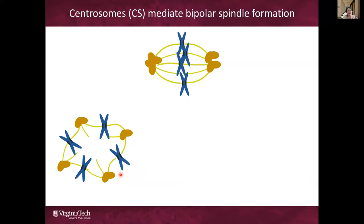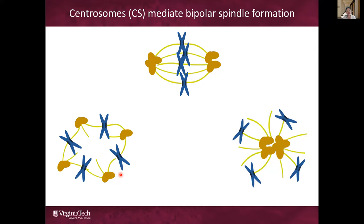Such an aberrant spindle can mess up the mitosis and kill the cell because the daughter cells cannot get the correct number of chromosomes. On the other hand, under certain perturbations, such as application of the Eg5 inhibitor — Eg5 is a molecular motor that mediates the anti-parallel sliding of microtubules and separation of the centrosomes — when Eg5 inhibitor is applied to the cell, the centrosomes may collapse into one pole, and the cell can form a monopolar spindle. Mitosis is also messed up in this case.